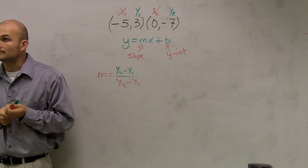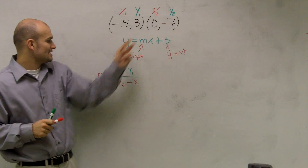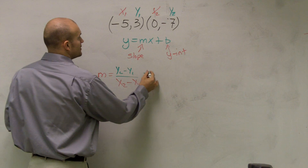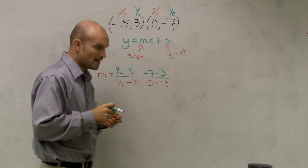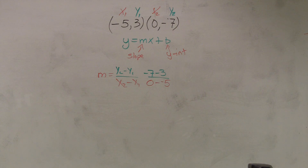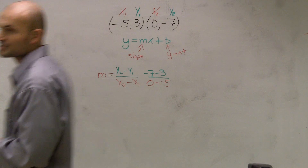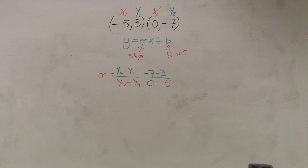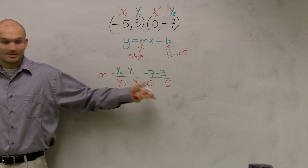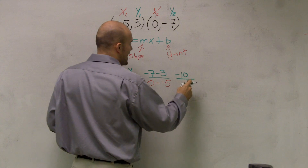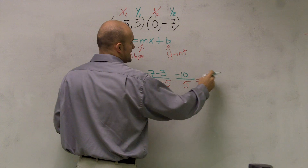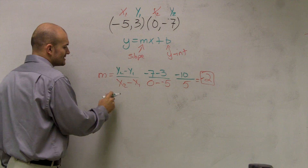Now find the slope of your problem. For my problem, I plug in the values: negative 7 minus 3, all over 0 minus negative 5. Negative 7 minus 3 is negative 10. 0 minus negative 5 gives me positive 5. Negative 10 divided by 5 equals negative 2. Therefore, my slope is m equals negative 2. Some of you might get a fraction as your slope — that's fine. Just make sure you label your points, plug them in, and find your slope.